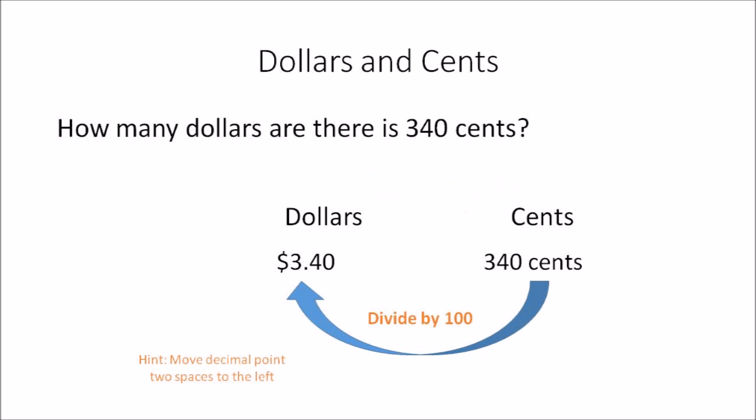In this example: how many dollars are there in 340 cents? This time you need to convert cents to dollars, so you divide the amount you have in cents by 100. When you divide 340 by 100, the answer you get is 3.40. As a hint, when you are dividing by 100 you need to move the decimal point two spaces to the left.